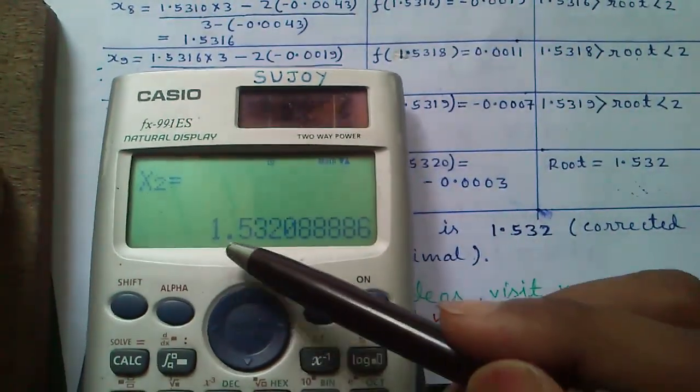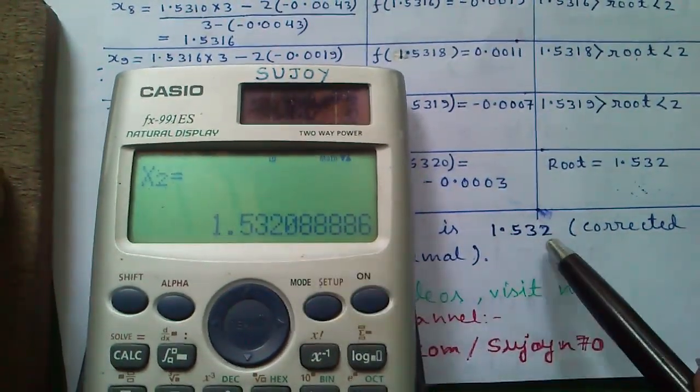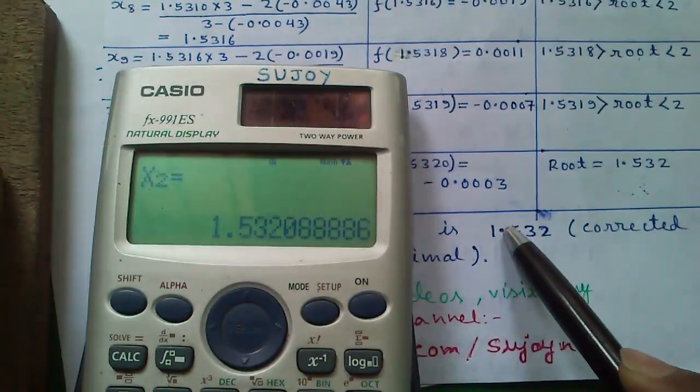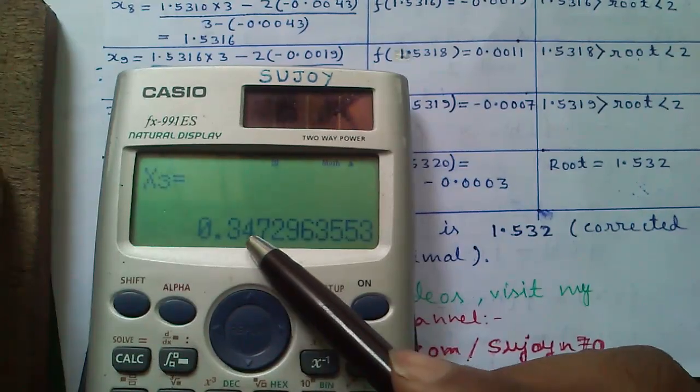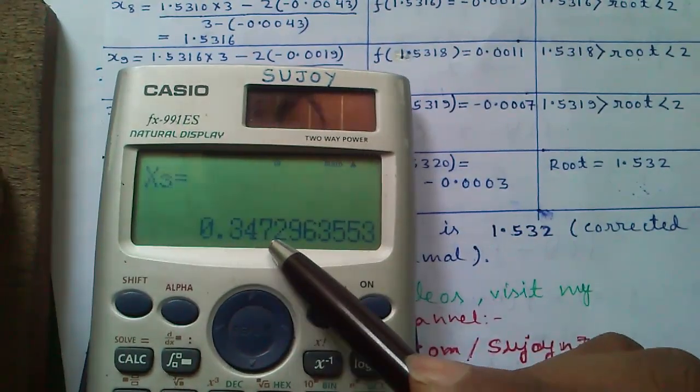So it will give you the first root, that is the minus root, minus 1.87. And our second root, that is 1.53208, obtained by de Gula Falsi method. And also the third root which is 0.3472.